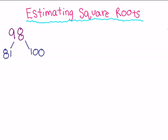The square root of 81 is 9. The square root of 100 is 10.